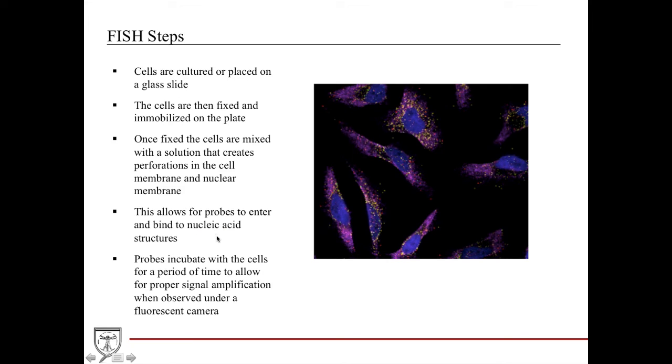The FISH steps are very basic. It's very straightforward. None of this is really difficult, but it's very interesting. The cells are cultured and they're placed in a glass slide and what you do is you fix them. You permanently fix them so they essentially are dead. You fix them to a plate. You mobilize them and you put them in a certain detergent or solution that creates these little microperforations in the cell membrane and in the nuclear membrane which allows the probes to then enter the cell or enter into the nucleus and you can then tag with whatever you're interested in and then it can glow.